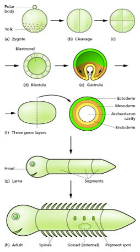Morphogenesis relates to the formation of three-dimensional shape. It mainly involves the orchestrated movements of cell sheets and of individual cells. Morphogenesis is important for creating the three germ layers of the early embryo — ectoderm, mesoderm, and endoderm — and for building up complex structures during organ development.